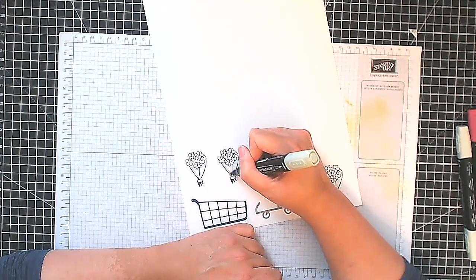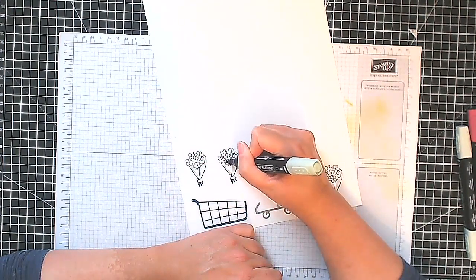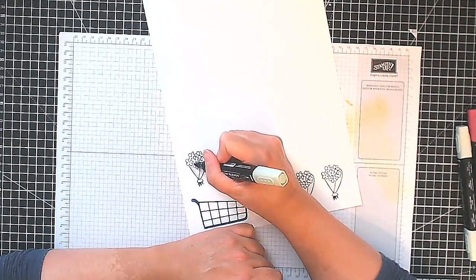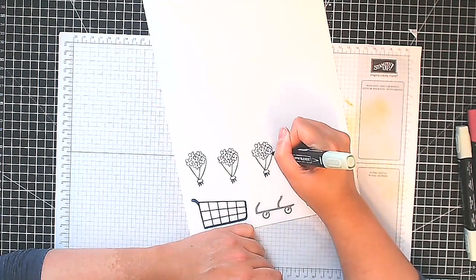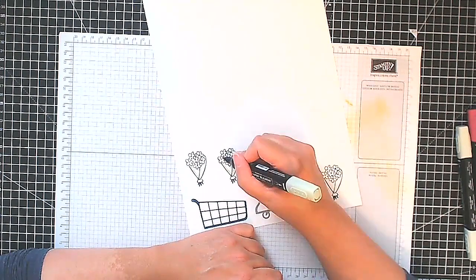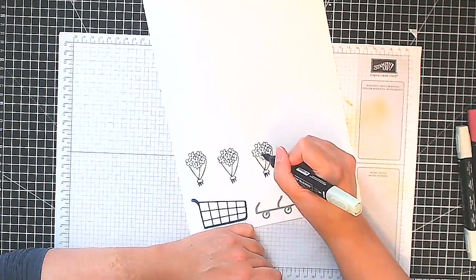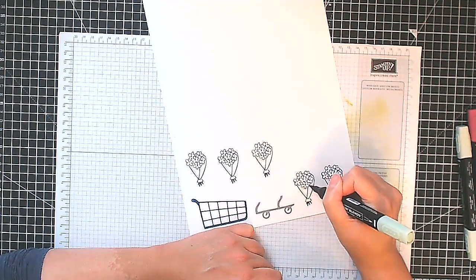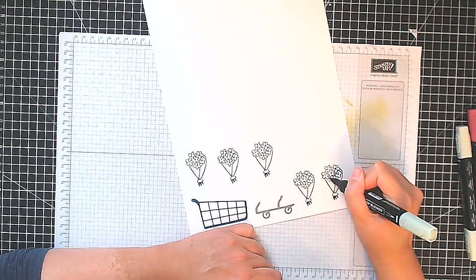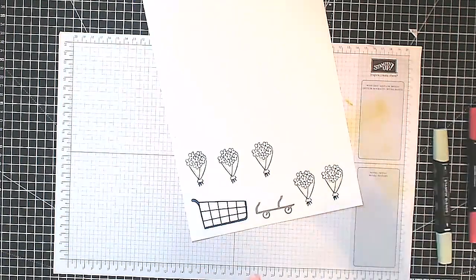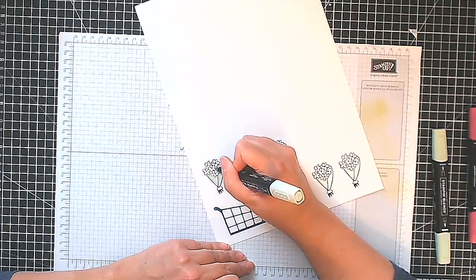Now I'm just going to start coloring in. I'm just starting here with my paper covering my flowers and I'm going with my darker marker and then I'm just going to add some, blend it out with the lighter color.